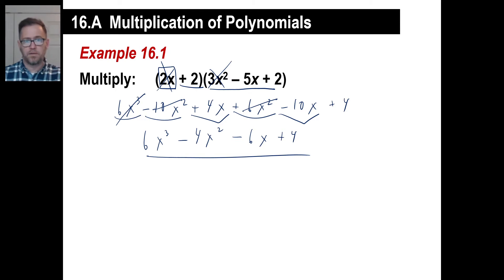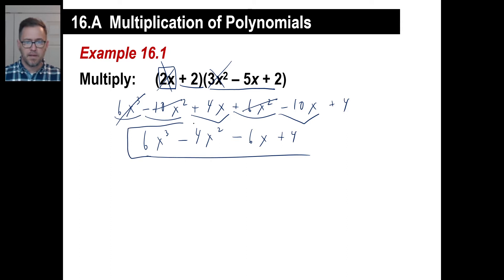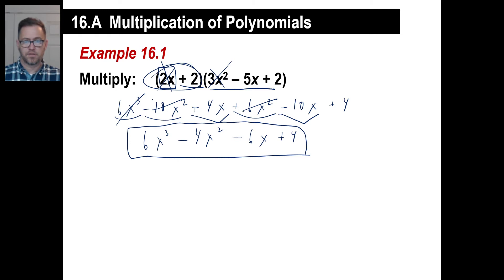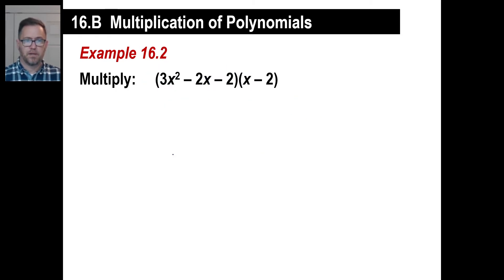So the process is: multiply one, then the other, then add your like terms. In just a minute we're going to go backwards — we're going to take a polynomial and divide it by something like that, and you'll see how this works.